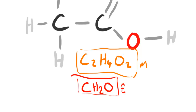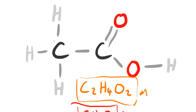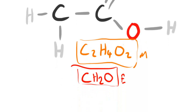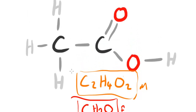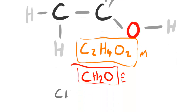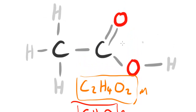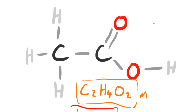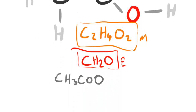Now let's look at the structural formula for ethanoic acid. The structural formula shows you carbon by carbon what each carbon is bonded to, giving you an idea of the structure. The first carbon has three hydrogens: CH3. Then the next carbon is bonded to an oxygen, and that oxygen is bonded to a hydrogen — we represent this group as COOH. So the structural formula is CH3COOH.